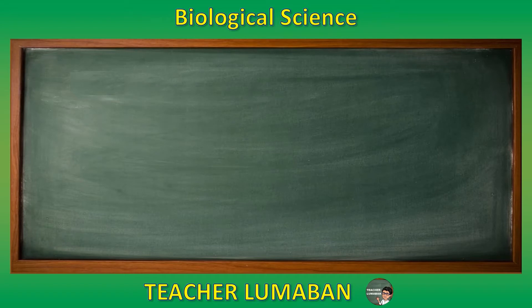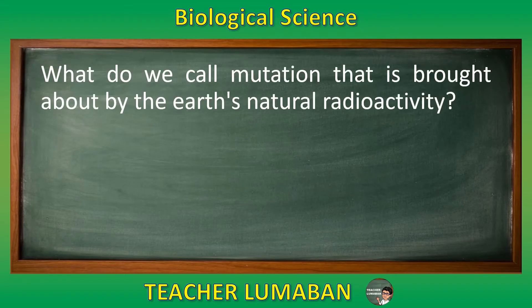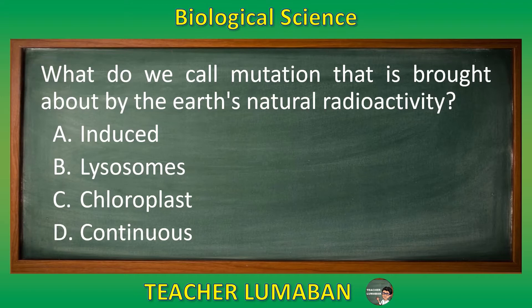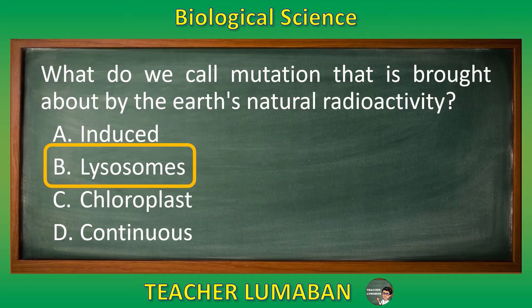What do we call the mutation that is brought about by the earth's natural radioactivity? Letter A: induced. Letter B: lysosomes. Letter C: chloroplast. Letter D: continuous. Choose the suitable answer based on the given choices in 5 seconds. 5, 4, 3, 2, 1. The correct answer is Letter B, lysosomes. The mutation that is brought about by the earth's natural radioactivity is called lysosomes.